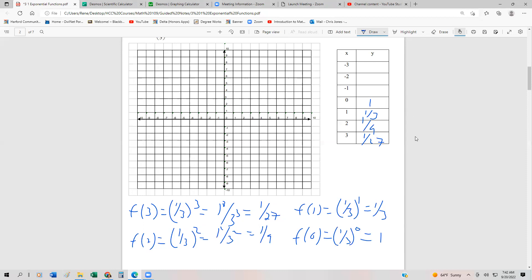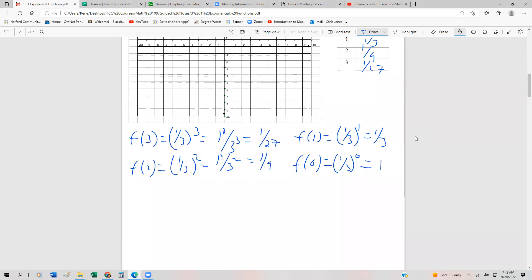And then we get these negative exponents. So let me illustrate how that's going to work. f at negative one is going to be one-third to the minus one. Remember, a negative exponent takes the reciprocal of whatever's inside your parentheses. So that's actually going to be three over one, and then instead of a negative, it becomes positive. And that's actually just going to be three.